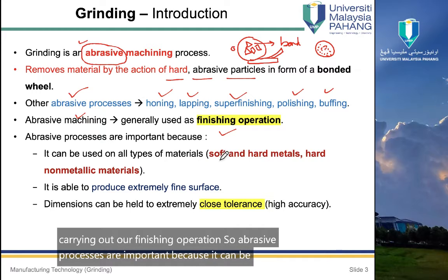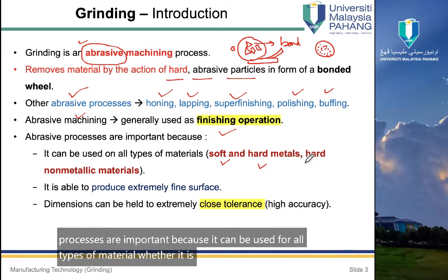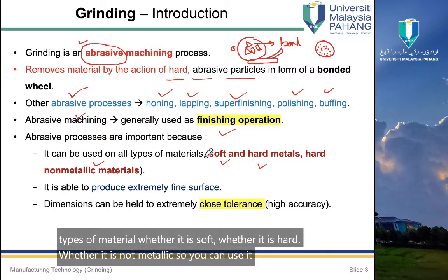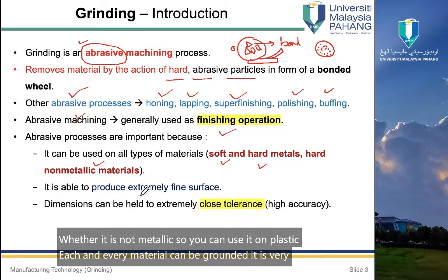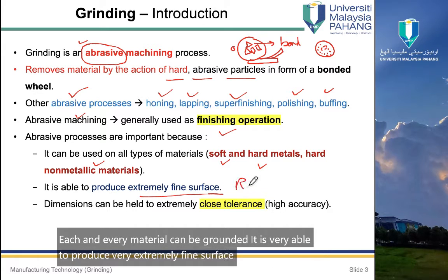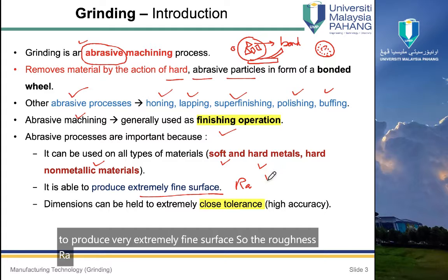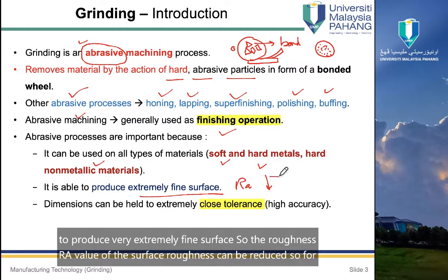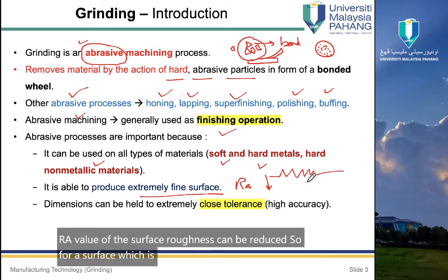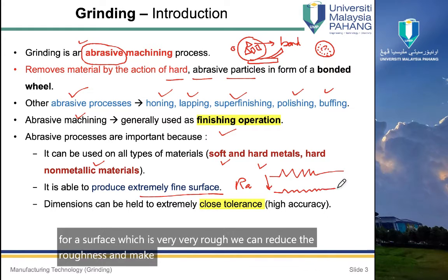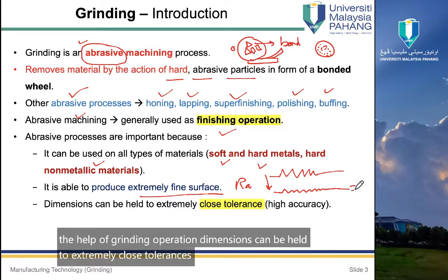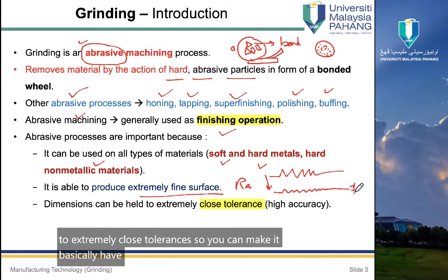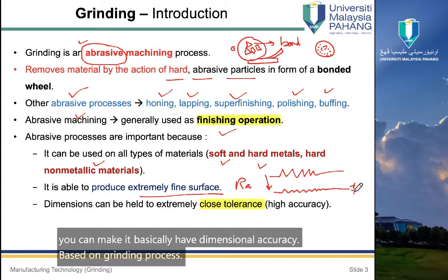Abrasive processes are important because they can be used on all types of material — soft, hard, or non-metallic such as plastic. They are able to produce extremely fine surfaces; the roughness Ra value can be reduced, making a rough surface smoother. Dimensions can be held to extremely close tolerances, providing dimensional accuracy through the grinding process.